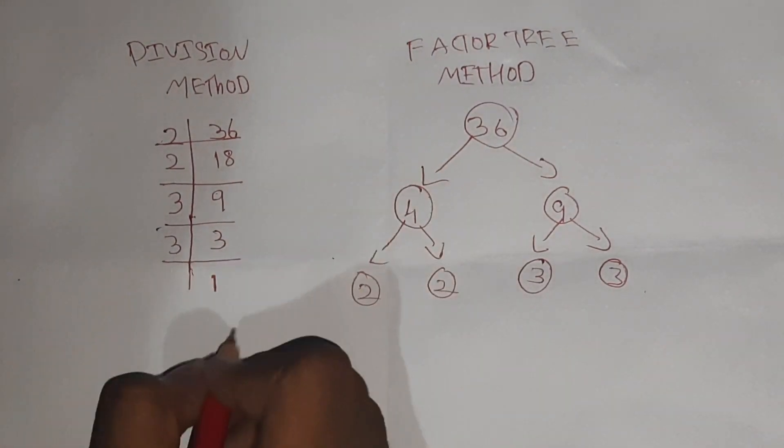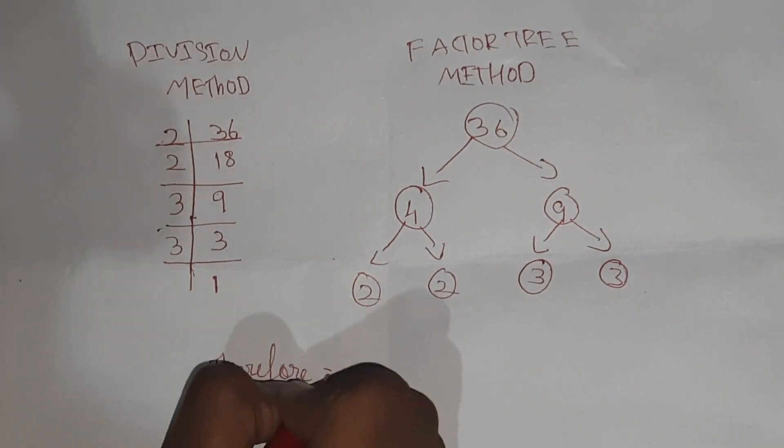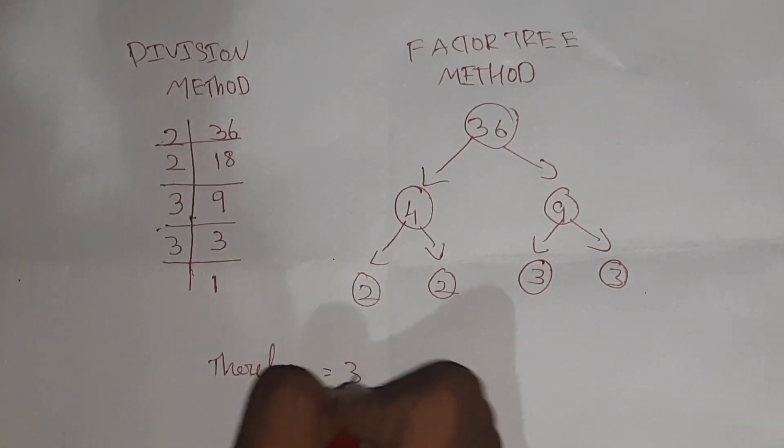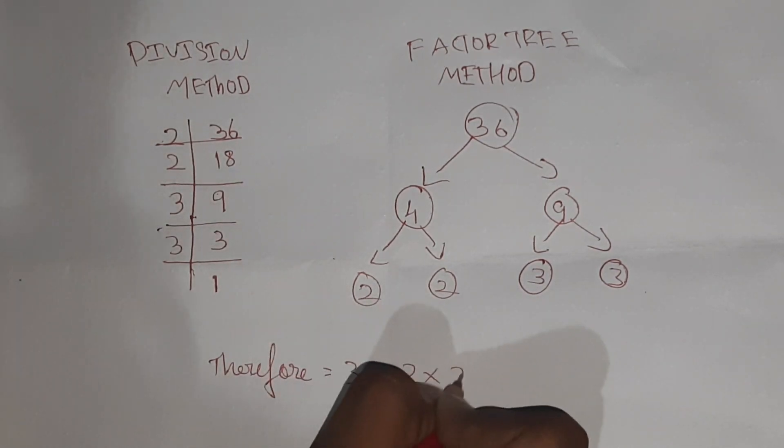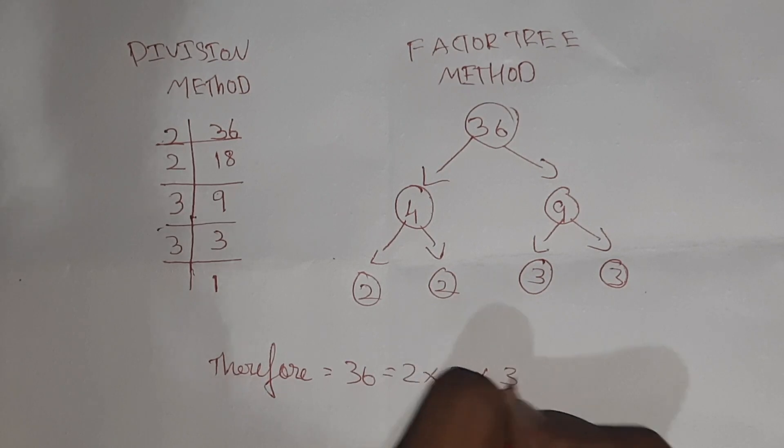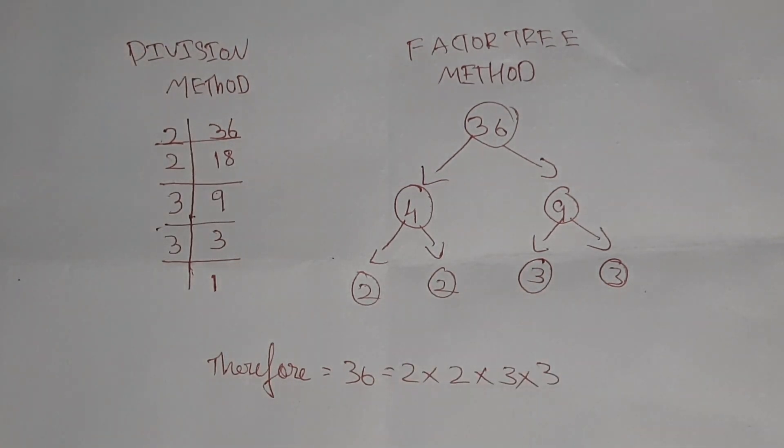So now we have the answer to the prime factorization. 36 is 2 into 2 into 3 into 3. This is the prime factor method.